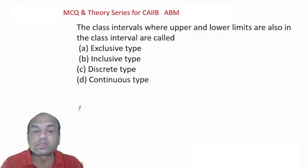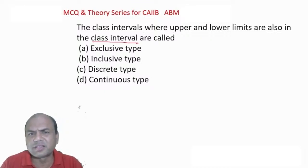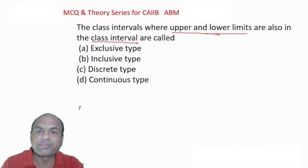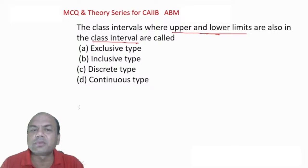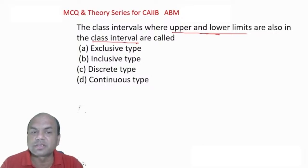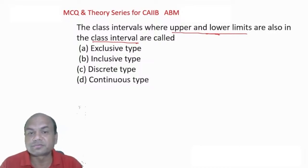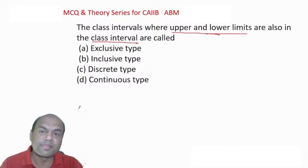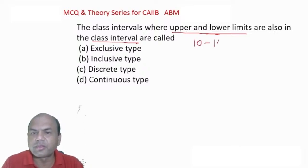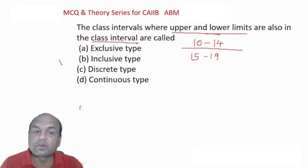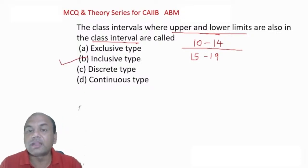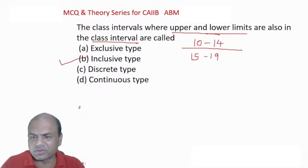The class where the upper and the lower limits are also included in the class interval is called inclusive. For example 10-14, 15-19 — upper and lower limits (10, 14, 15, 19) are all part of their respective classes. We then convert inclusive to exclusive before solving numericals.